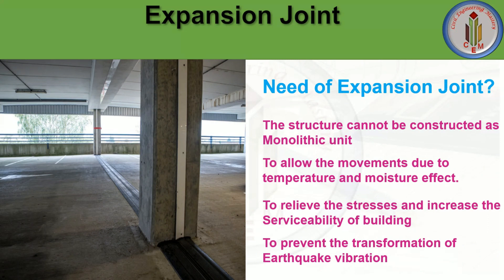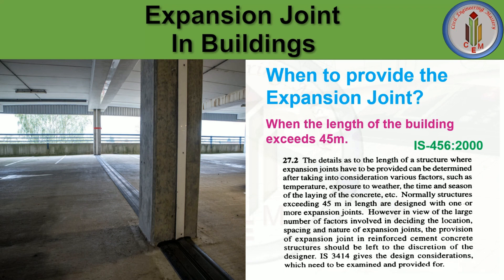The structure cannot be constructed as a monolithic unit. A long building unit cannot be constructed as a single monolithic unit; we need to provide expansion joints to allow movement due to temperature and moisture effect. It is also provided to relieve stresses and increase the serviceability of the building. This expansion joint helps to prevent the transmission of earthquake vibration — the pounding effect — when the two segments have a tendency to move back and forth.